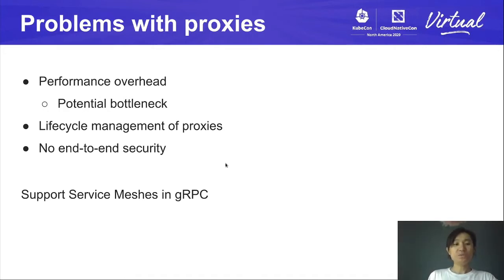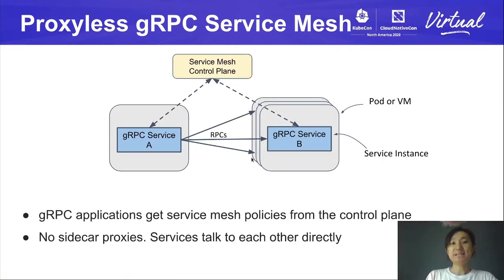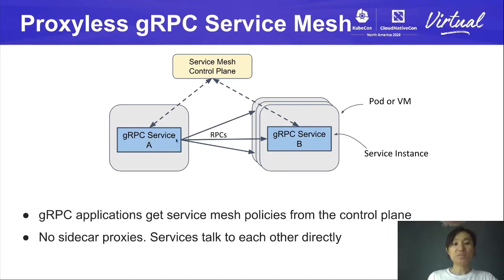So because of those problems, we were thinking if we can add service mesh support into gRPC so we don't need those proxies. This leads to a proxyless gRPC service mesh. In this deployment, it's very similar to the proxy-based deployment, but the only difference is that there's no proxy in between. The gRPC service will talk to the control plane directly to get the configuration, and the gRPC services will talk to each other directly without going through proxies. The module we added into gRPC can understand the configuration from the control plane and do all the features that were done by the proxy.